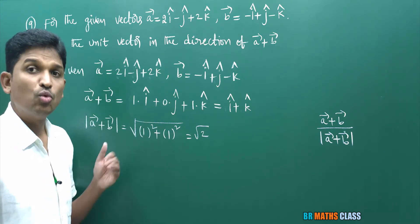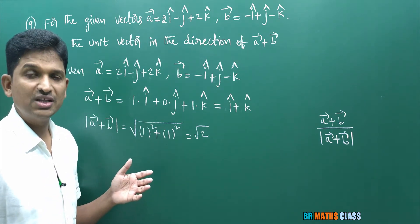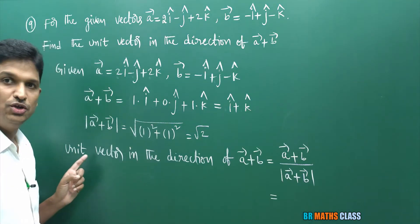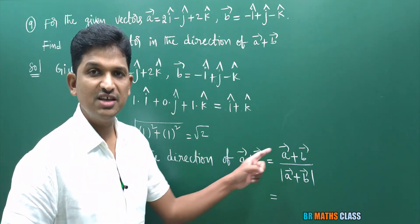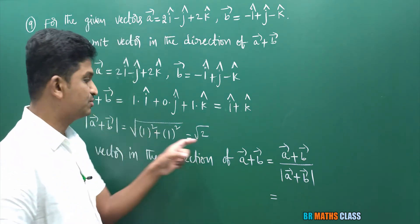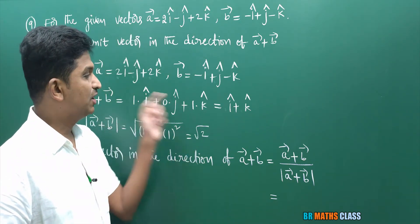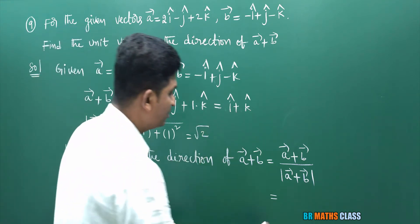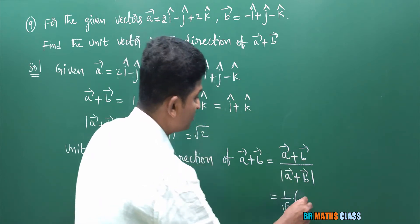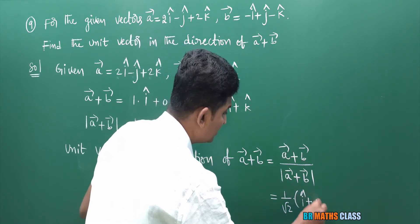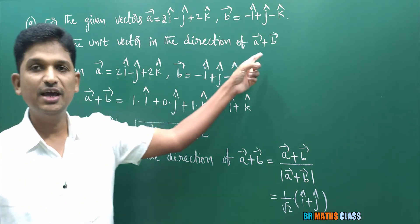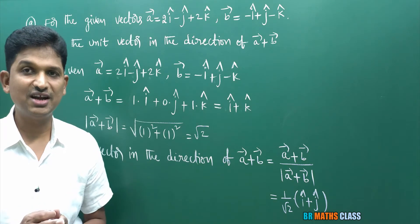Now I know a⃗ plus b⃗ equals i cap plus k cap, and magnitude of a⃗ plus b⃗ is root 2. The unit vector in the direction of a⃗ plus b⃗ is (i cap plus k cap) divided by root 2, which can be written as (1 by root 2)(i cap plus k cap). I hope you understand this.